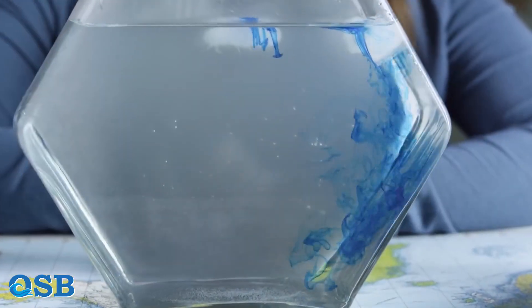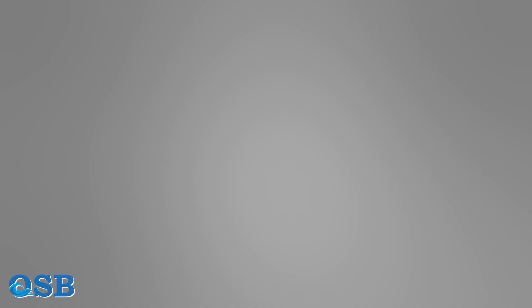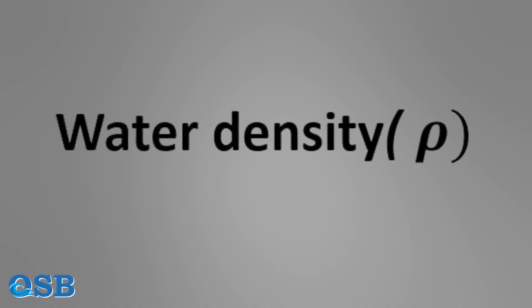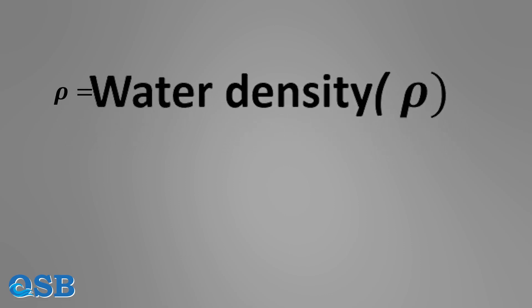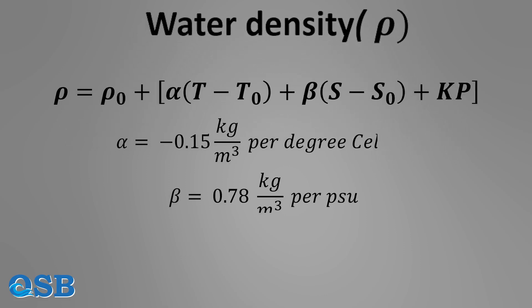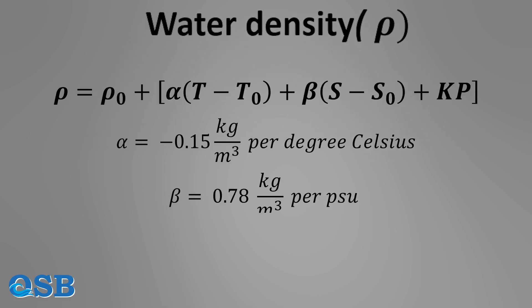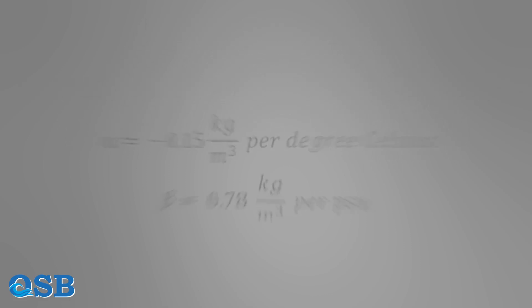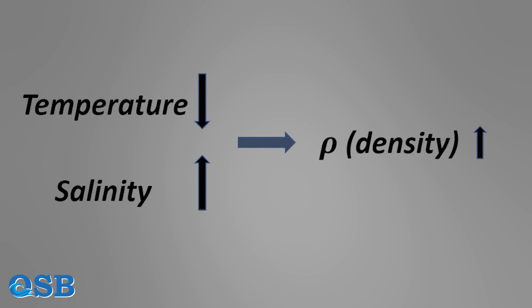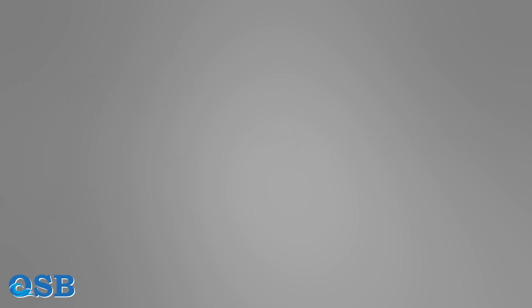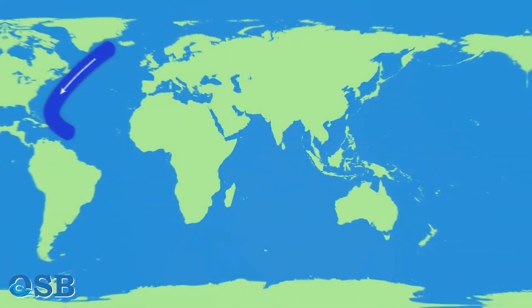Now we focus on water. The density of the water has been calculated based on this equation. This equation shows that when the temperature decreases or salinity increases, the density of the water increases. This is simple, but the result of it is very important for the ocean.